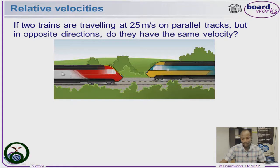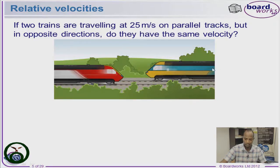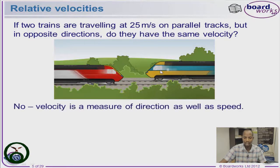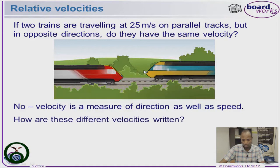The first train is moving towards the right and the second train is moving towards the left, so we are talking about velocity. If we assign a positive sign to the one going right and a negative sign to the one going left, the effects will cancel out because plus 25 and minus 25 gives no net velocity — the effect of both cancels out.